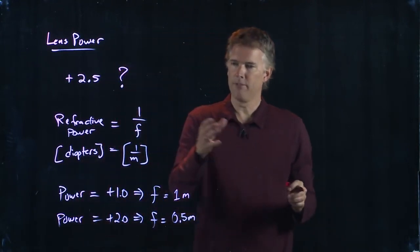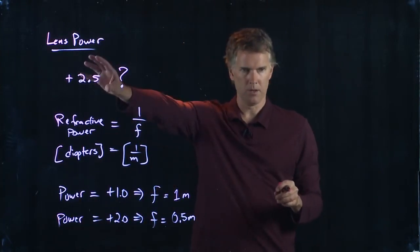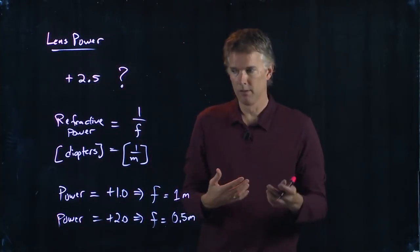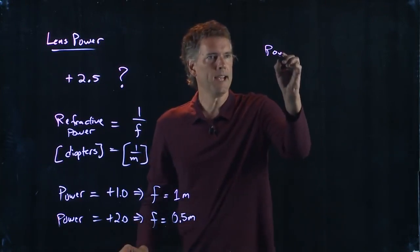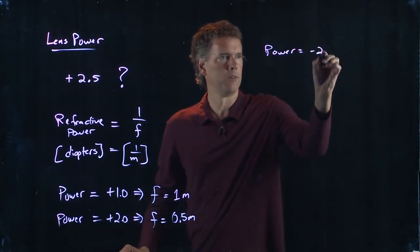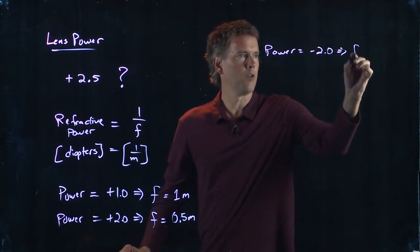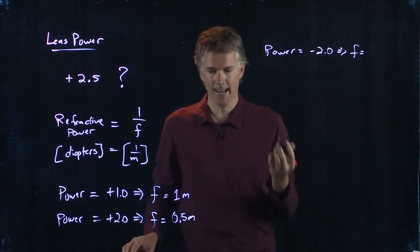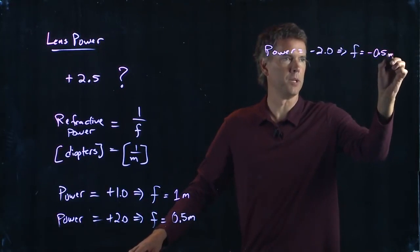If you have negative numbers for your prescription, then you have diverging lenses. So if your power equals negative 2, then your focal length is negative 0.5 meters.